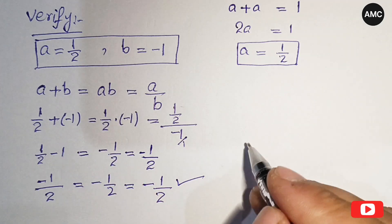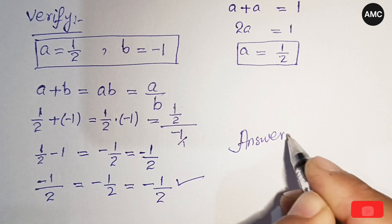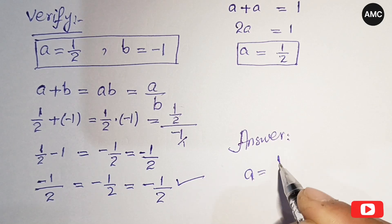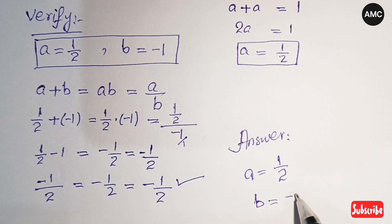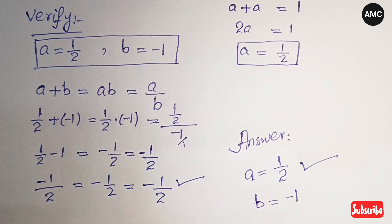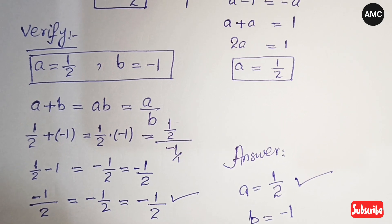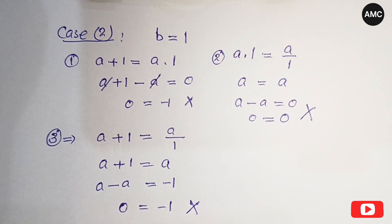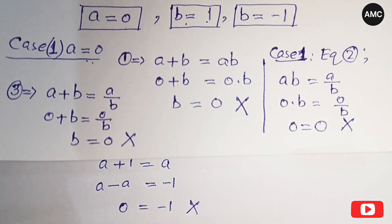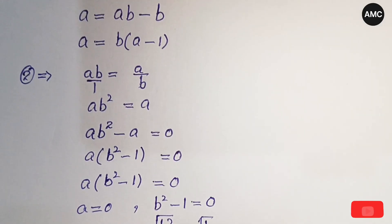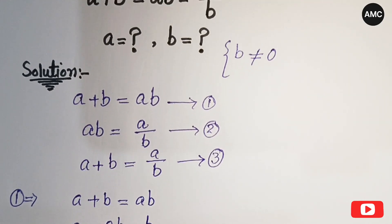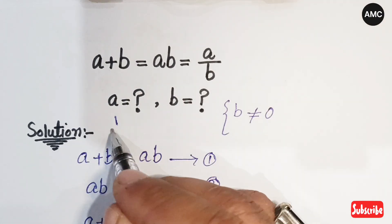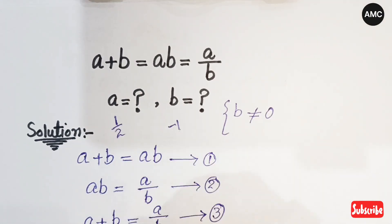Our final answer is a equals one half and b equals minus one. I hope you have enjoyed this video. Thanks for watching, have a nice day, goodbye.